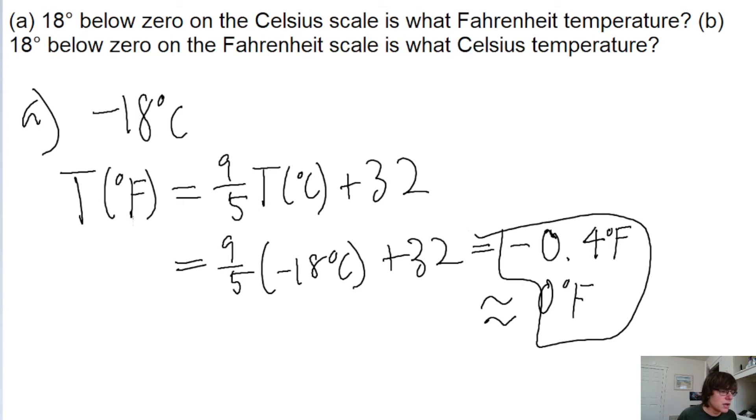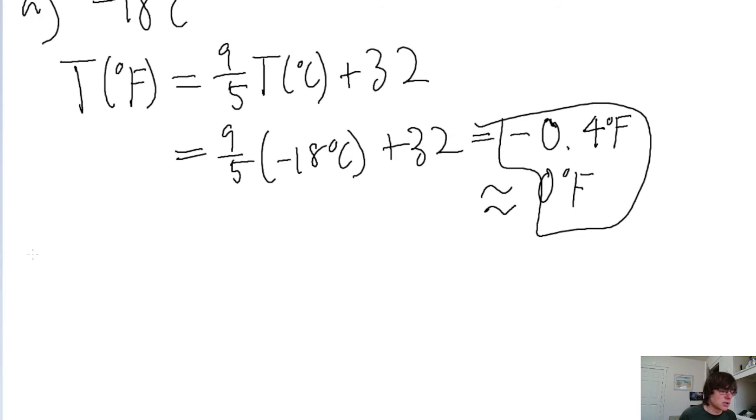Part B, we're given 18 degrees below zero on the Fahrenheit scale. So that's negative 18 degrees Fahrenheit. So now we're doing like the opposite conversion.